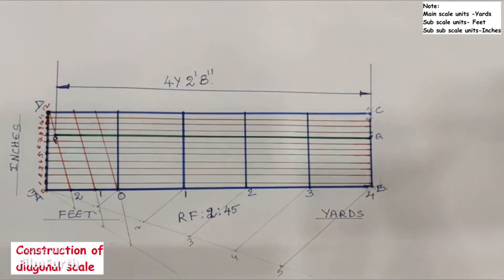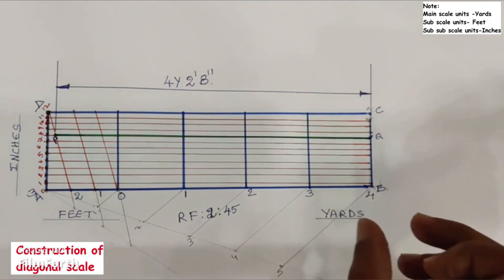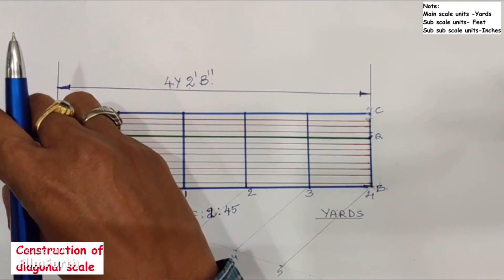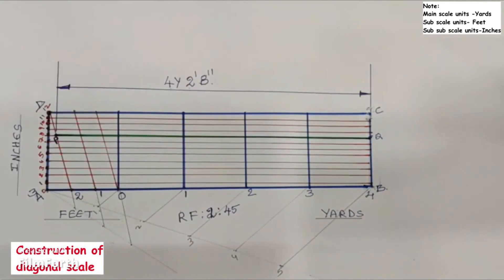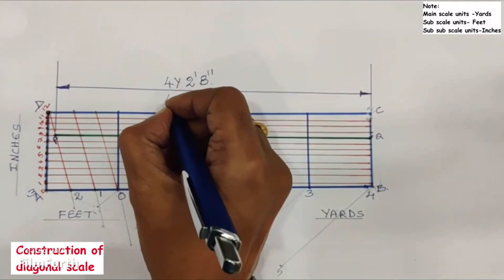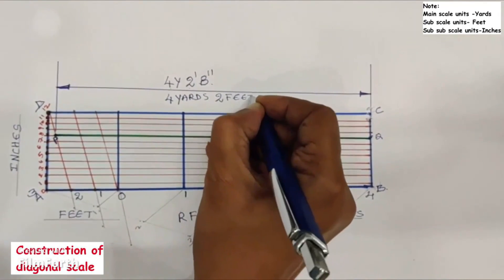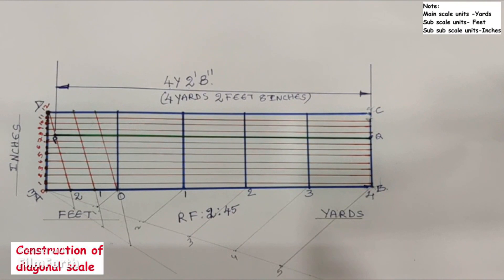This particular problem is very very important and it was asked many times under university examinations, so you need to practice this solved problem from beginning to end with perfection. You also need to have perfect clarity about units conversion — the main scale units are yards, immediate subscale units are feet, and the immediate sub-subscale units are inches. So 1 yard equals 3 feet and 1 foot equals 12 inches. The measurement of 4 yards 2 feet 8 inches has been shown on the diagonal scale.